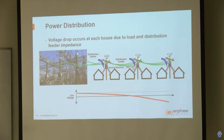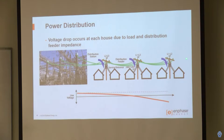Looking at the distribution system: we have a distribution station with distribution feeders and transformers. People call them cans because they look like a can — they feed each house. The transmission lines are in the hundreds of thousands of volts; distribution feeders are thousands of volts; and in-house we're down to hundreds of volts. As you work your way further down the feeder, the voltage drops — because at each node we're pulling current, and at each successive node the cumulative current increases, so we get a voltage drop building up.